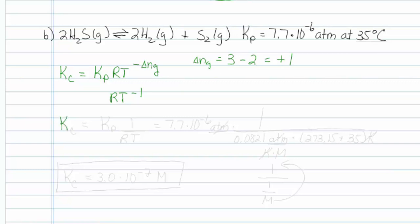Let's put in our values. We have 7.7 times ten to the minus six, that's in units of atmospheres, and I'm going to divide it by my R, which is 0.0821 atmosphere per Kelvin molar, and also by the temperature, which I'm now working at 35 degrees Celsius, so that's 273.15 plus 35 Kelvin. Plunk that into my calculator, and I come up with 3.0 times ten to the minus seven.